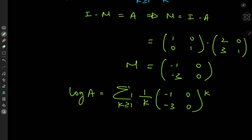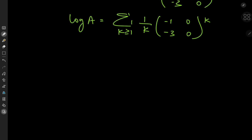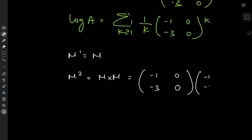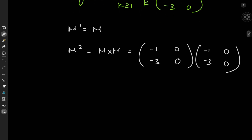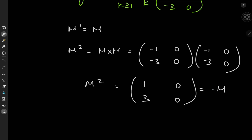So we're now interested in the integer powers of matrix M. Starting with the obvious, M to the 1 is M. For M squared, we multiply M by itself: [[-1,-3],[0,0]] times [[-1,-3],[0,0]], which gives [[1,3],[0,0]]. Notice this looks strikingly similar to M — specifically, it's the negative of M.